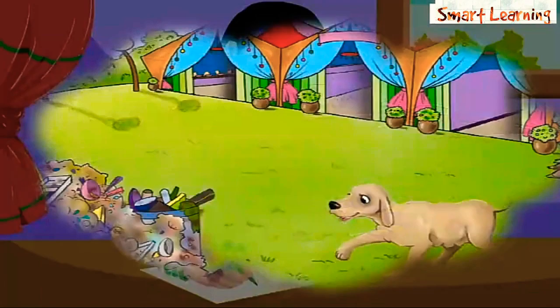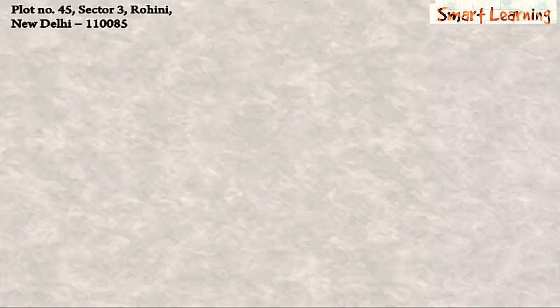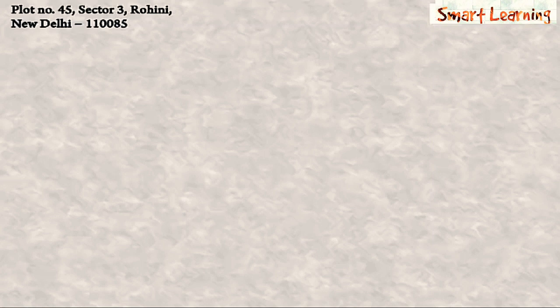Firstly, she writes her address on the top left side. In this case it is Plot Number 45, Sector 3, Rohini, New Delhi 110085. Below it she writes the date.